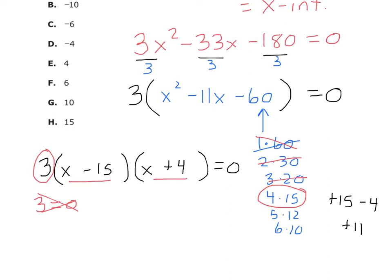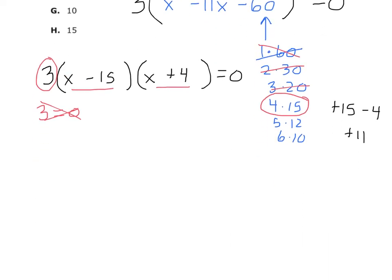Now let's set x minus 15 equal to zero, and solve. And so you add 15 on both sides, and so what do you get? X equals 15. So there's one solution. There's one zero. There's one x intercept.